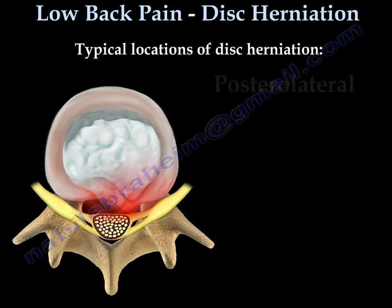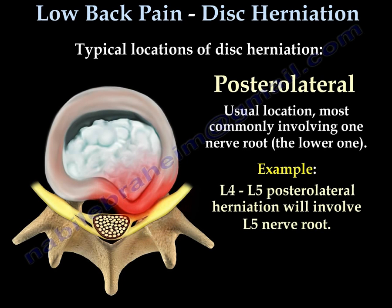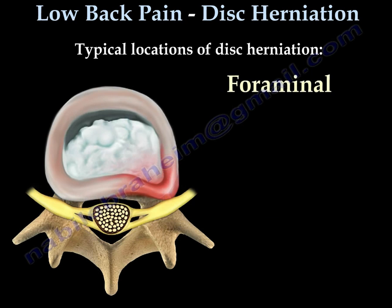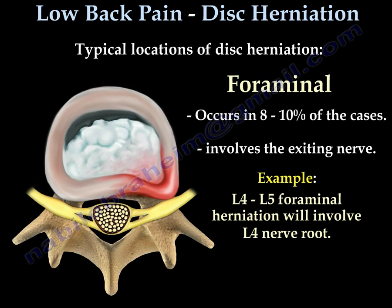The second location is posterolateral, which is usually the most common location. It involves one nerve root — the lower one. For example, an L4-L5 herniation will involve the L5 nerve root. In contrast, an L4-L5 herniation at a different position will involve the L4 nerve root.